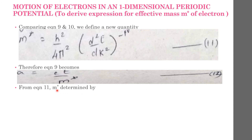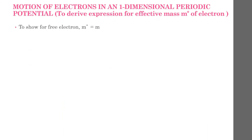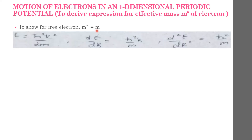From equation 11, m star can be determined from d²E/dK², which shows the importance of the E versus k curve for the motion of electrons. Now we will prove that for a free electron, m star equals m. The energy of a free electron is E = ℏ²k²/2m. Differentiating: dE/dk = ℏ²k/m. Differentiating again: d²E/dk² = ℏ²/m.